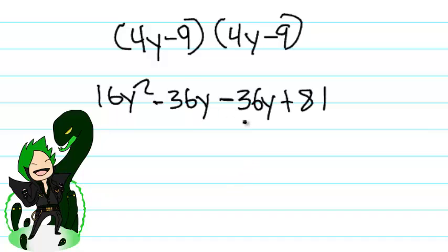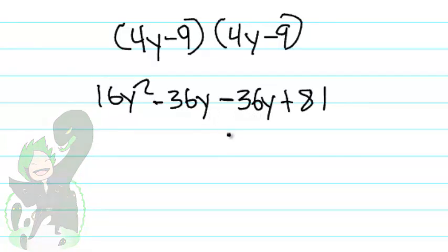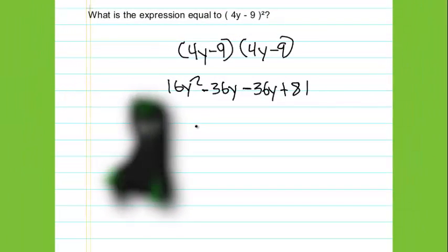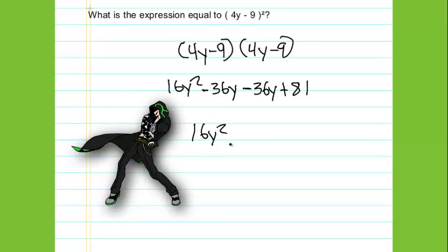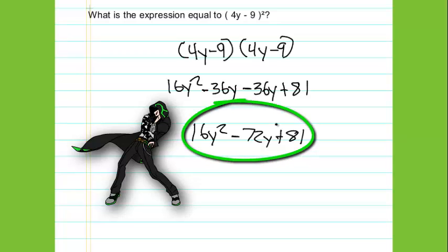Here we can combine factors in the equation, similar ones. So we add negative 36y with negative 36y. And the answer we get is 16y squared minus 72y plus 81. This is the expression equal to 4y minus 9 squared.